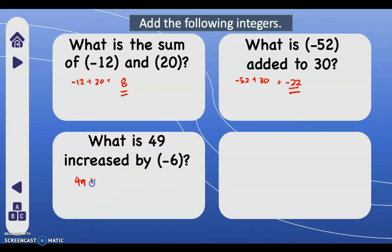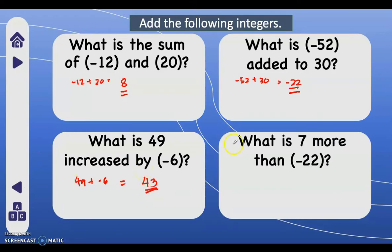Next: what is 49 increased by negative 6? So 49 plus negative 6 — we subtract: 49 minus 6, that is 43. Then copy the sign of the greater absolute value, which is 49 — it has a greater absolute value and 49 is positive, therefore our answer is positive 43. Next: what is 7 more than negative 22? When we say 'more than', we need to add.